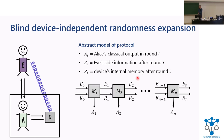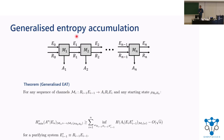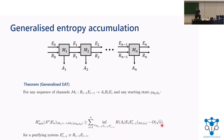This abstract description is precisely the kind of setting that this generalized entropy accumulation theorem deals with. What we prove is that for any such sequence of channels and any starting state rho R0 E0, the smooth min entropy of all outputs An — concatenated — conditioned on the final side information En, but notably not conditioned on the final memory register of the device, is lower bounded by a sum of single-round quantities minus some finite-size corrections.